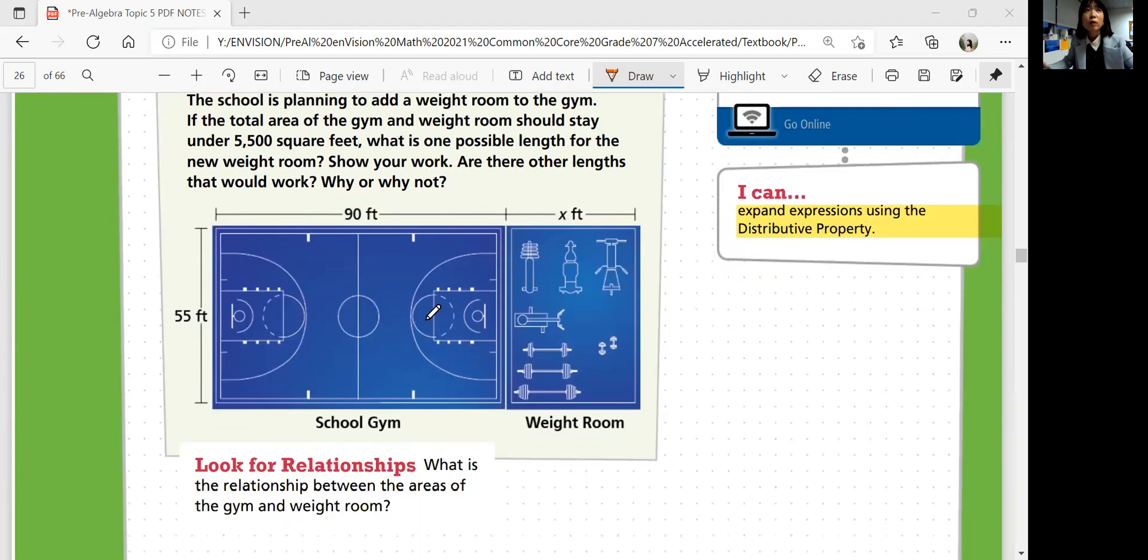So first of all, what do you need to know? The total area is width times length. But what is the length? Gym length. This is going to be 55, right? This is the same, right? So the width is the same.